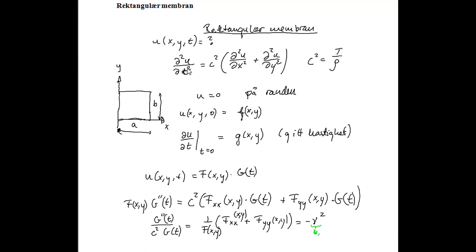The displacement U is zero on the boundary, so the boundary is fixed. And we have information about the displacement at T equal to zero, the initial displacement, U(X,Y,0). And we call this initial deflection F of X, Y.